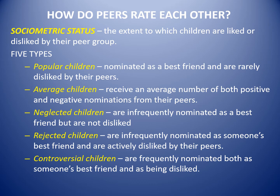The first group is popular children — those most people nominate as a close or desirable friend and who are rarely disliked by anyone. Some people are very popular but also very unpopular due to in-group conflict. The second group is average, where most people fall: some like you, some dislike you, so positive and negative nominations are roughly equal.